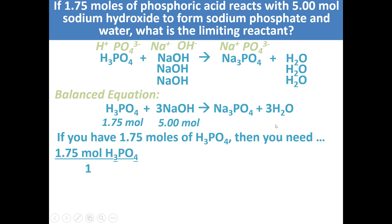Then we can do a mole-to-mole ratio from a balanced equation between the phosphoric acid and the sodium hydroxide. So for every one mole of phosphoric acid, there are three moles of sodium hydroxide.